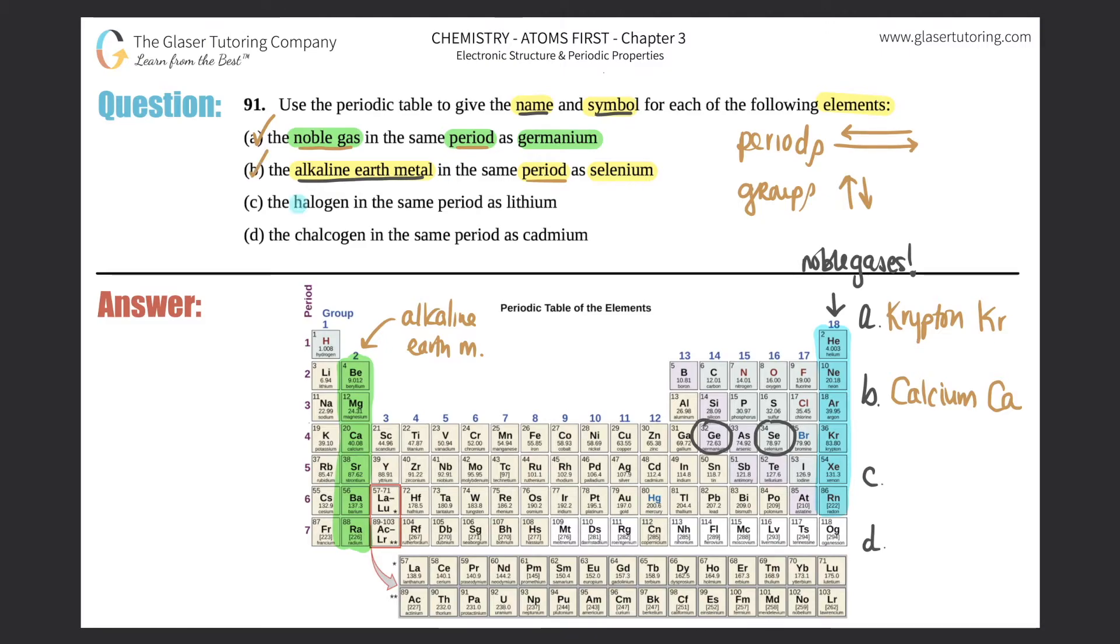Next one. Letter c: the halogen in the same period as lithium. Well, lithium is number three, it's right here. Same period, so it's got to be in period number two, so from here all the way to neon. But which one is it? It's got to be the halogen, right? And where are the halogens on the periodic table?